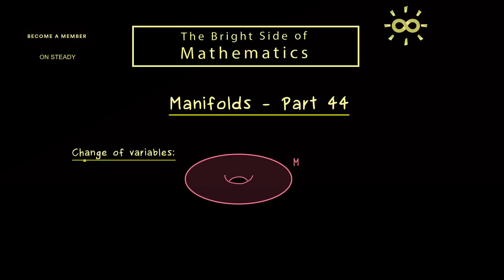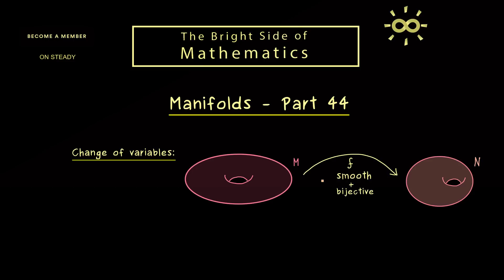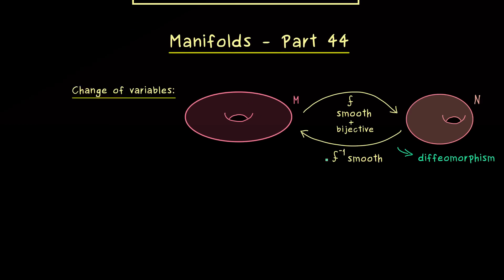And there you might already know that change of variables means that we go from one manifold M to another one N. This means we have a smooth map f between two manifolds. However, this is not enough because it also needs to be bijective such that we can go back from N to M without losing any information. And even there we need an additional information for f inverse, namely it should also be a smooth map. Hence f is smooth in both directions and this is what we usually call a diffeomorphism between manifolds.